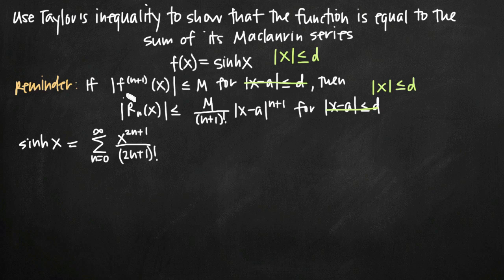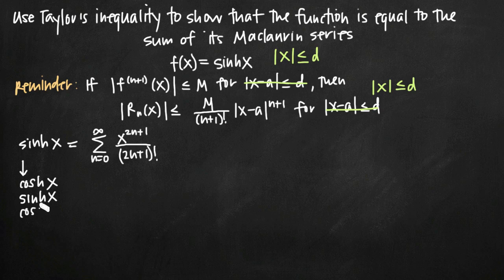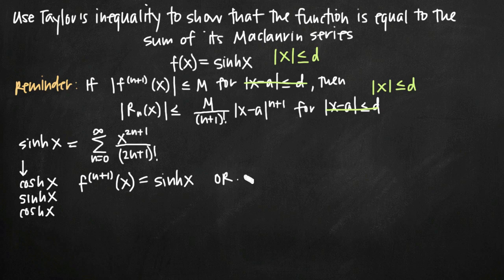What we're looking at now is the (n+1)th derivative term. When we're dealing with hyperbolic sine, the (n+1)th derivative is always going to be hyperbolic cosine or hyperbolic sine, because the derivative of sinh is cosh of x, the derivative of cosh is back to sinh of x, and it just keeps alternating. So the (n+1)th derivative is always represented by one of these two functions — f of x is always equal to either sinh or cosh.